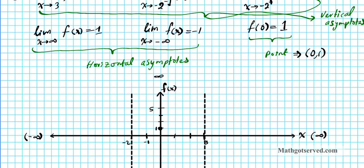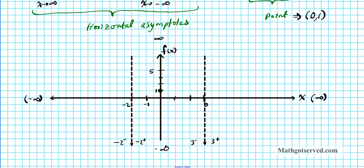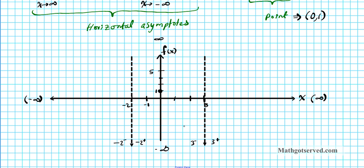As you approach 3 from the left, the function goes to infinity, so we have it going in this direction approaching the vertical asymptote and the curve shoots up. When you're approaching 3 from the right it also goes to infinity, so it is going to be coming down in that direction. Let's also sketch our horizontal asymptotes — when x goes to infinity, the function approaches 1.